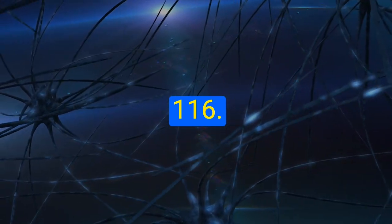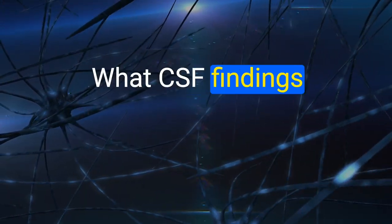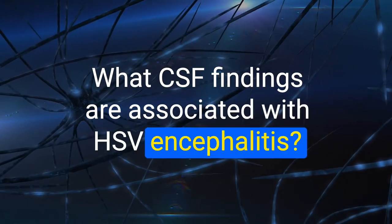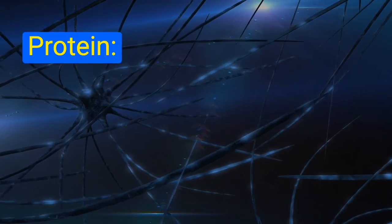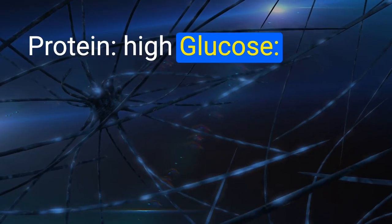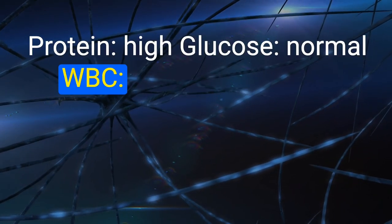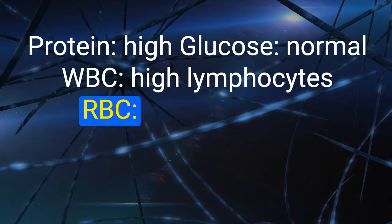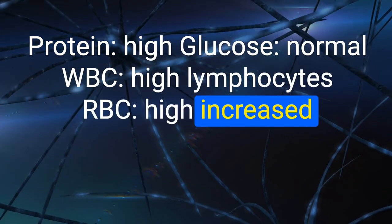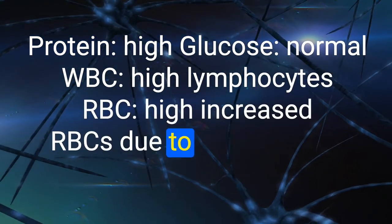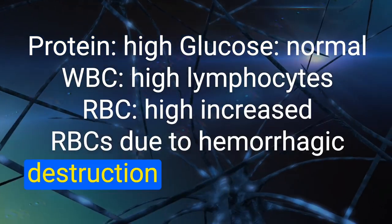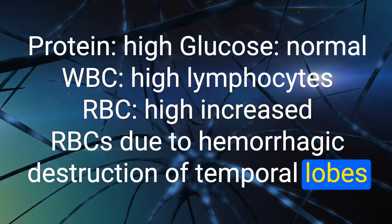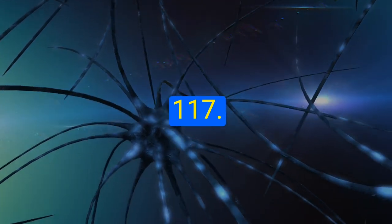116. What CSF findings are associated with HSV encephalitis? Elevated protein, normal glucose, elevated WBC with lymphocytic predominance, and elevated RBCs — due to hemorrhagic destruction of the temporal lobes.